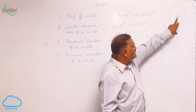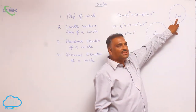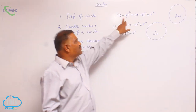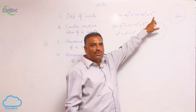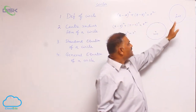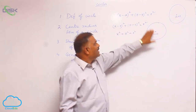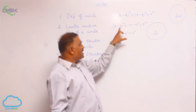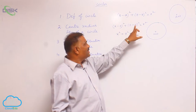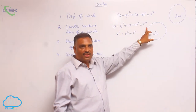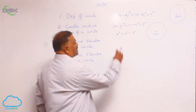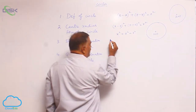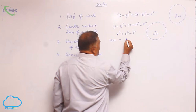If the center of the circle is (a, b) and the radius is r, the equation of the circle is x minus a, whole square, plus y minus b, whole square, equal to r square. If the origin is shifted from (a, b) to (0, 0), the equation reduces to x square plus y square equal to r square. This is called the standard equation of a circle.